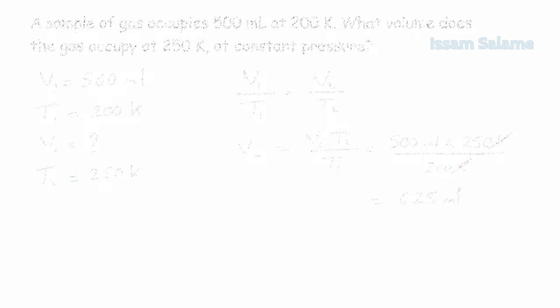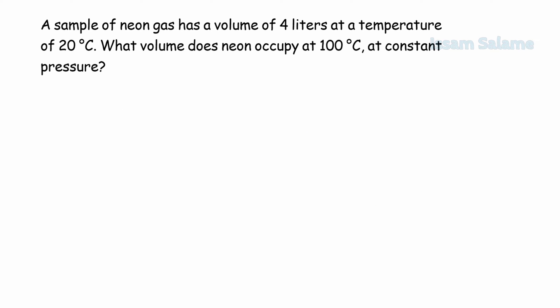Let's have another exercise. A sample of neon gas has a volume of 4 liters at a temperature of 20 degrees Celsius. What volume does neon occupy at 100 degrees Celsius at constant pressure?